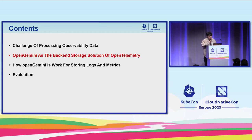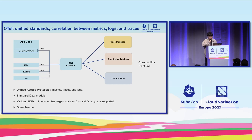The next part explains the solution of OpenGemini combined with OpenTelemetry. Over the years, OpenTelemetry has become the standard for observability. It provides a unified access protocol and standard data models for metrics, traces, and logs. It also provides various SDKs such as C++ and Go, and it is completely open source. This gave us a big opportunity to unify our agent and collector.